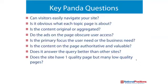The key Panda questions you need to ask yourself about your website: Can visitors easily navigate your site? Is it an easy site to move around? Is the navigation helpful and the user experience a pleasant one? Is it obvious what each topic page is about? Are there good headlines? Is the content written strongly? Are there good calls to action? Is the web design seamless and clean? Is the copy easy to read? Is the content original or aggregated? Unique, fresh content is one of the pillars of SEO and it's only becoming more so.